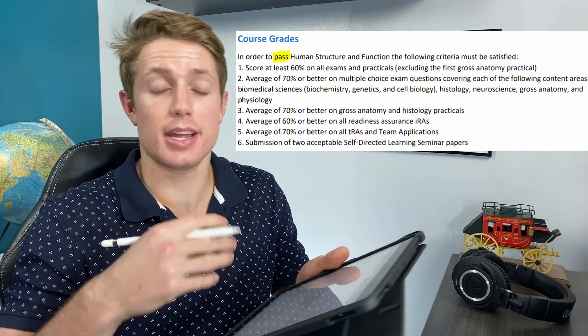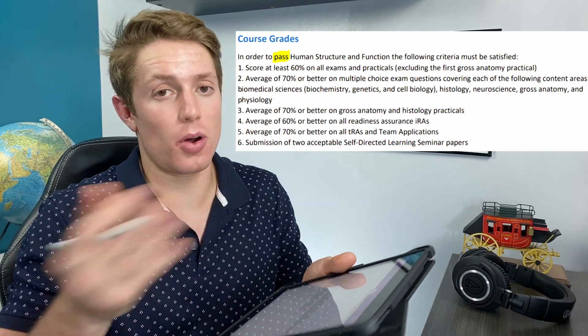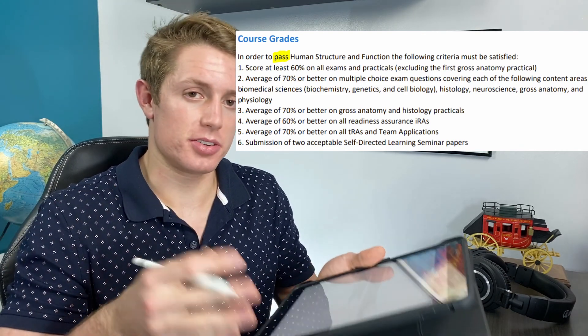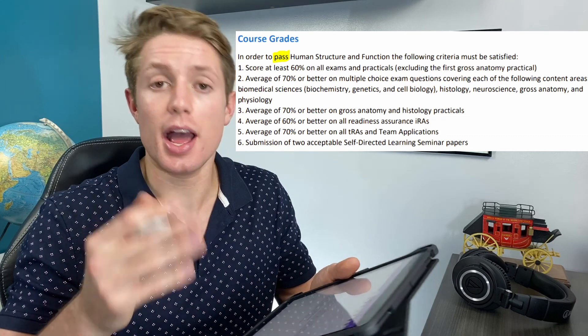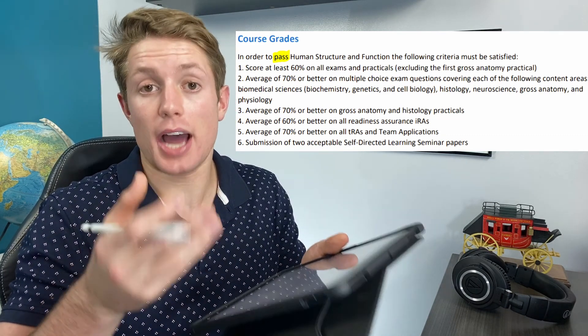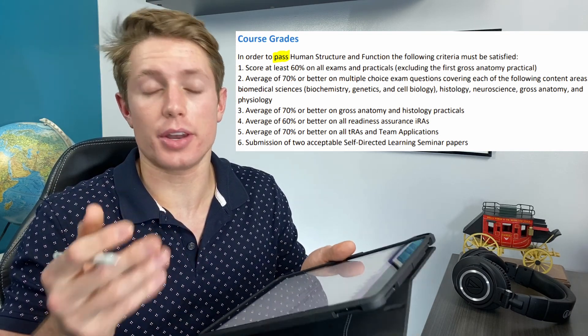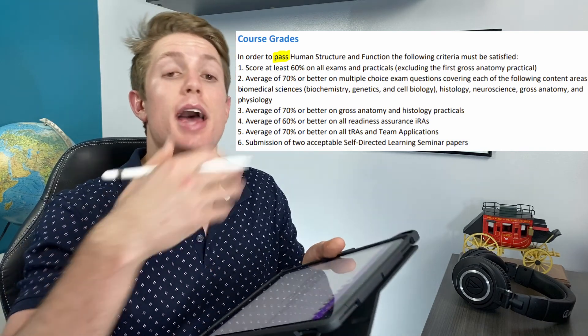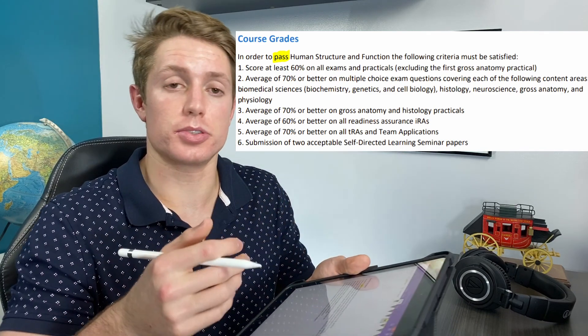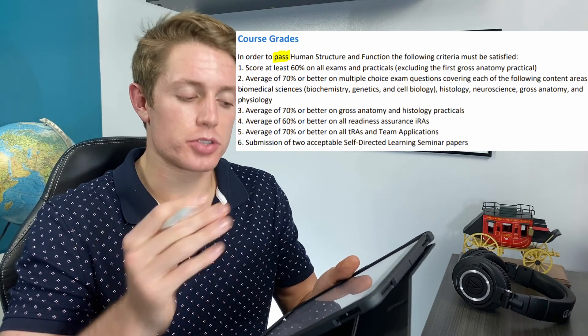Human Structure and Function, that's the course that I take at medical school, that covers everything from biochemistry to genetics to anatomy to histology. I'm also taking a course called Clinical Skills Foundation, and that's learning the basics of doctoring. And then I'm also taking a course called Cultural Determinants of Health and Health Disparities. But as far as what you think of with medical school, it's Human Structure and Function.